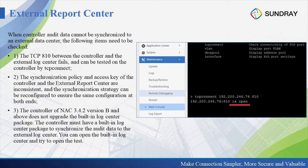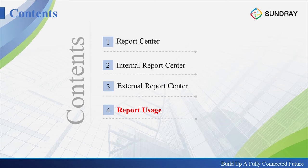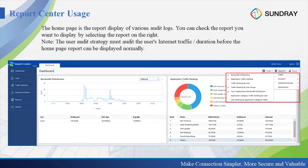If you can open the built-in log center, try to run the test. For report center usage: after we install the external report center or enable the internal report center, in the homepage it will display various audit logs. You can check the reports you want to display by selecting a report on the right side. For example, if we want to know the bandwidth distribution and the application traffic ranking, we choose it, and the homepage will display this information.